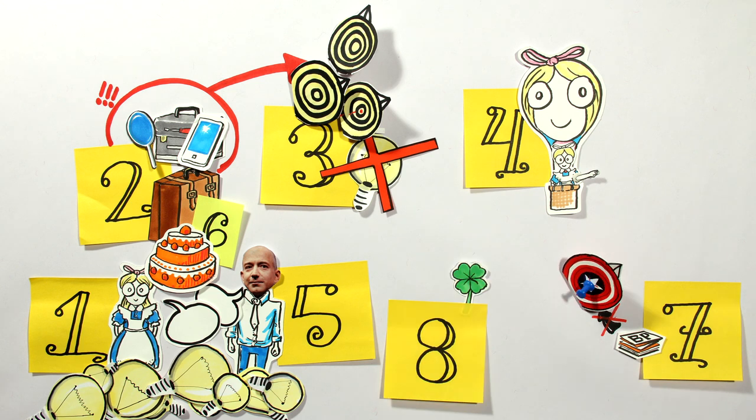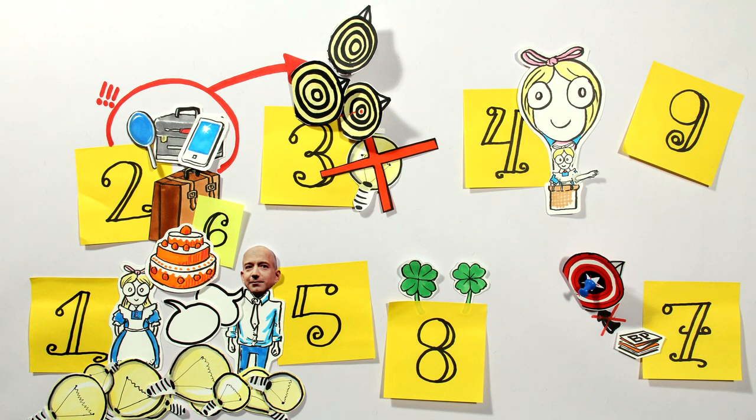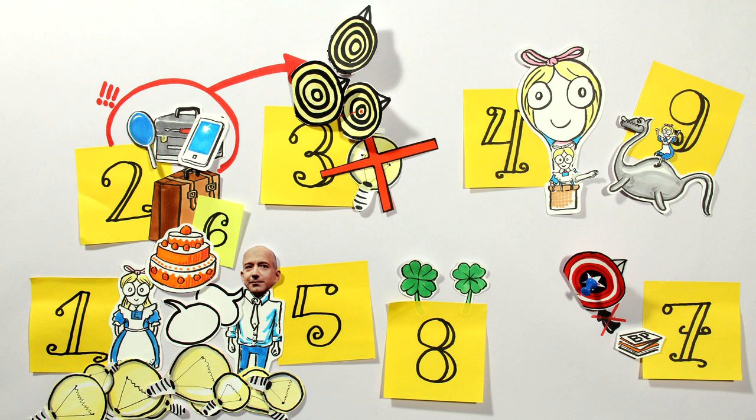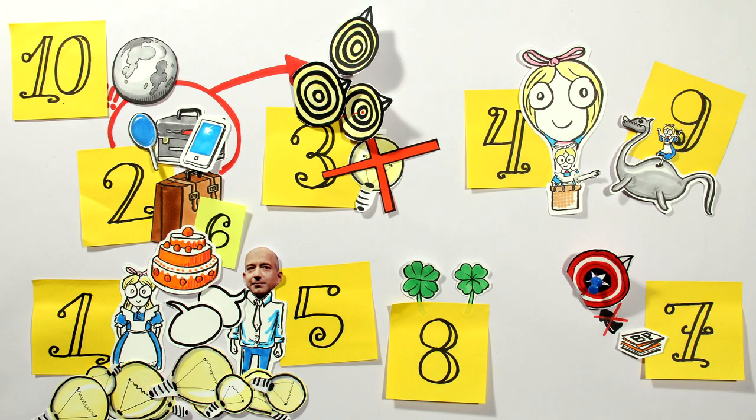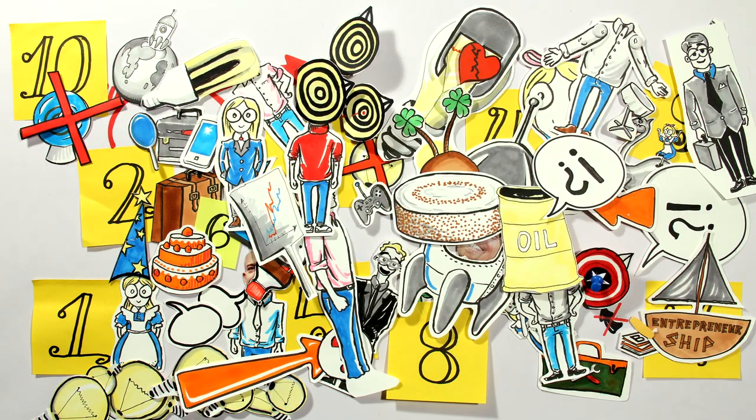But with the entrepreneurial method, I turn the wheel of fortune more often. Ninth, we're not born as entrepreneurs but can learn to deal with uncertainty. Tenth, if you co-create the future as an entrepreneur, you don't have to predict it.